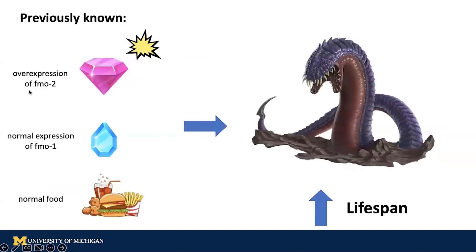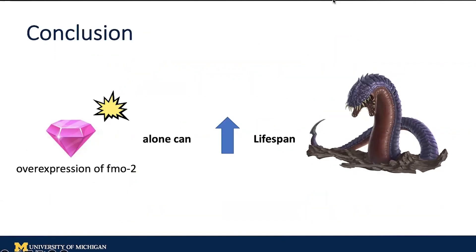So when FMO2 is overexpressed and other things are normal, we have an increase in lifespan. So we can come to the conclusion that the super pink gem alone can increase lifespan of the worm monster.